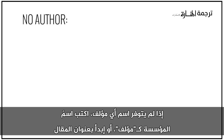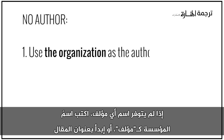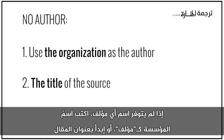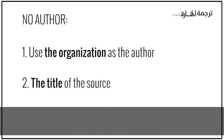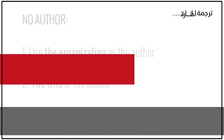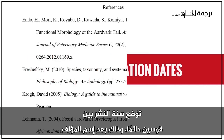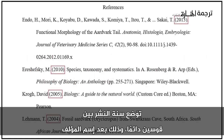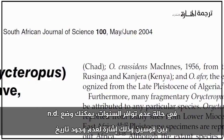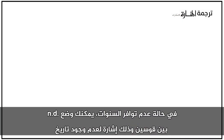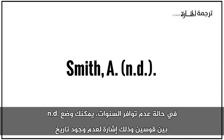If no author is provided, you can use the organization as the author or start with the title of the article. The publication year is always included in parentheses after the author's names. If no year is available, you can put N.D. for no date in parentheses.